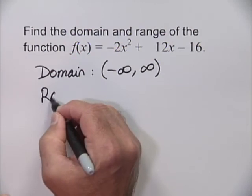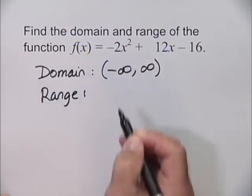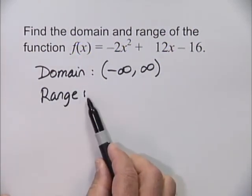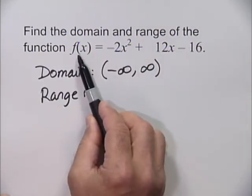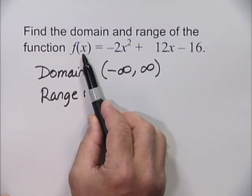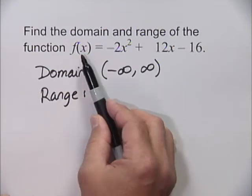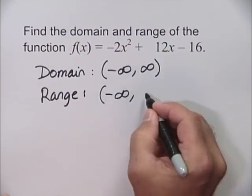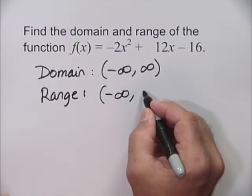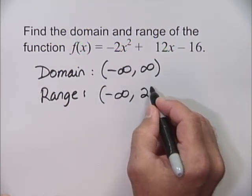The range, however, we just determined that the maximum value of f(x) occurred at x = 3 and that gives a maximum value of 2. So therefore, the range is negative infinity up to and including 2.